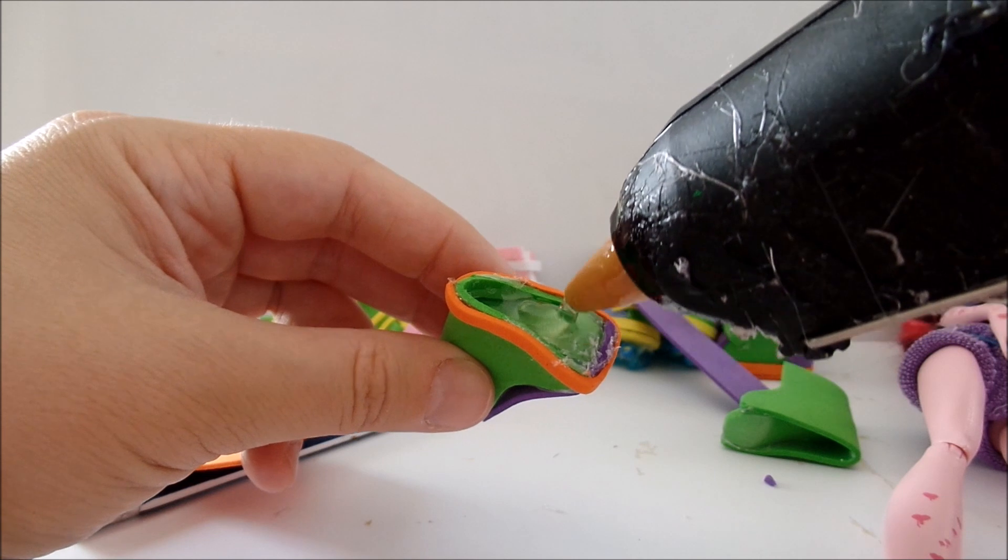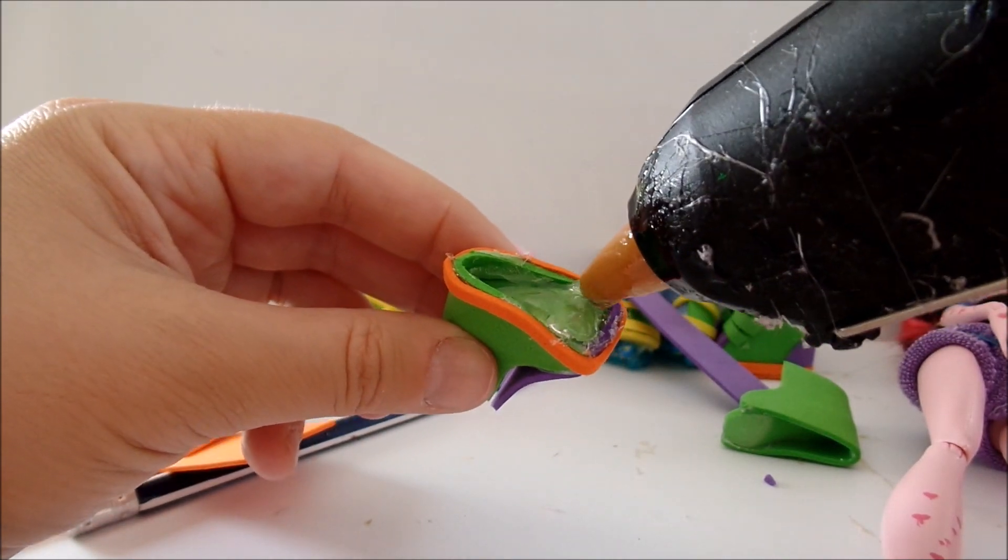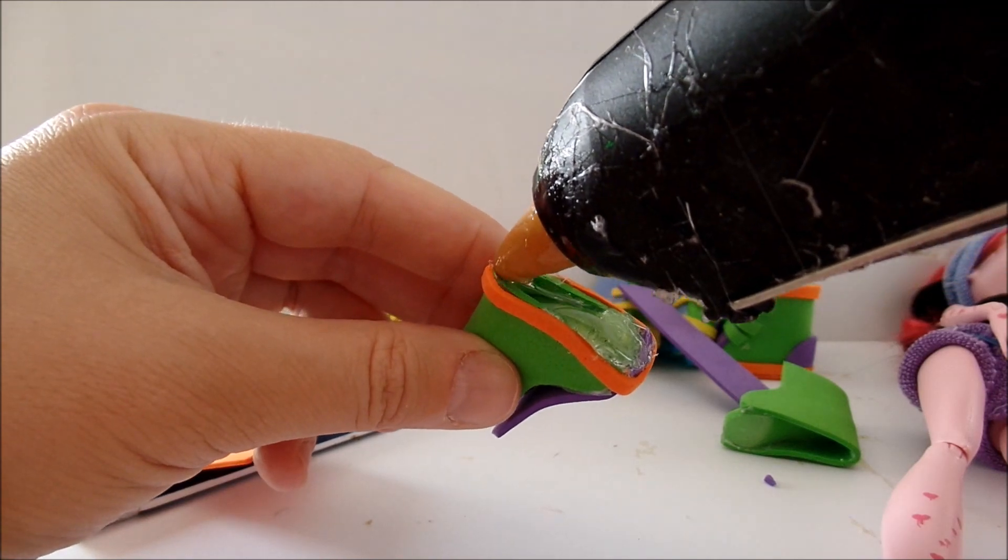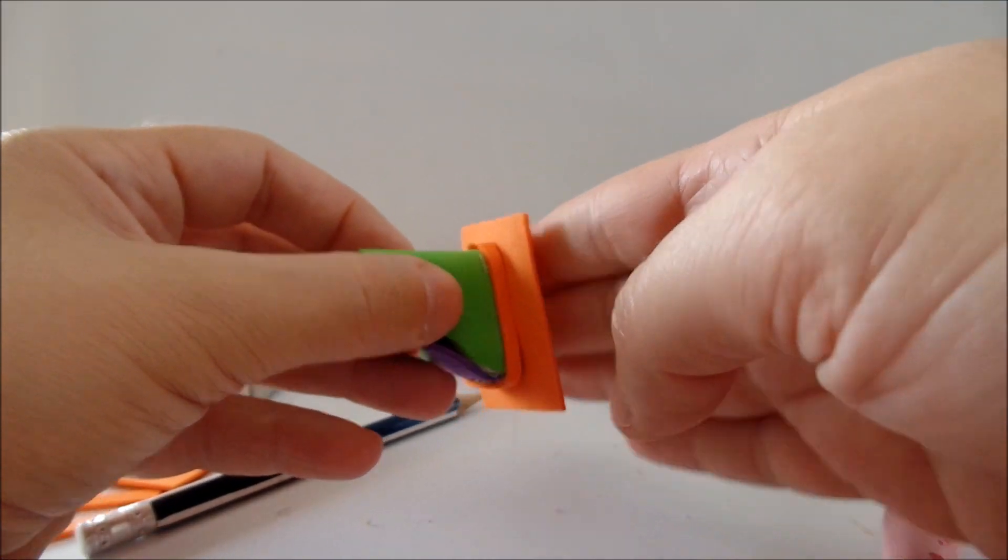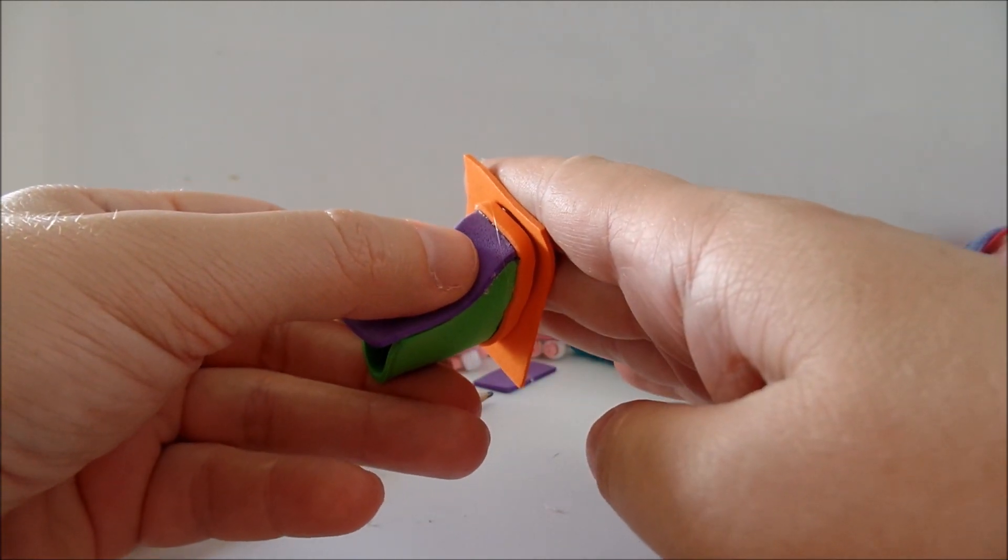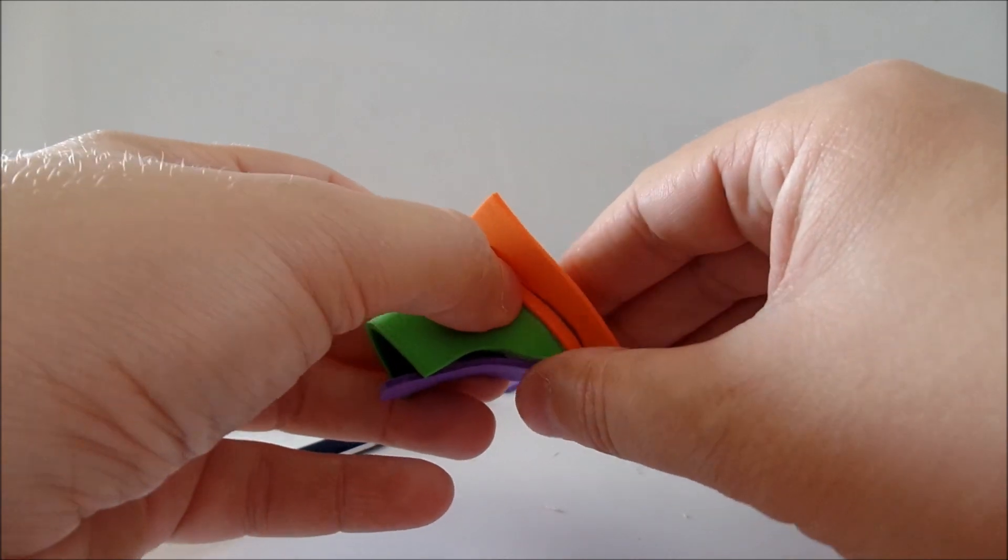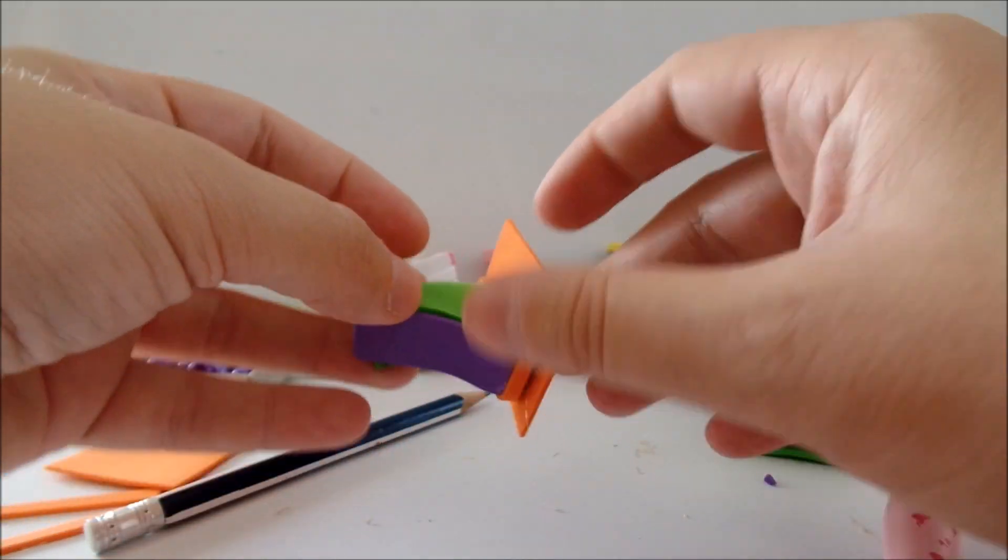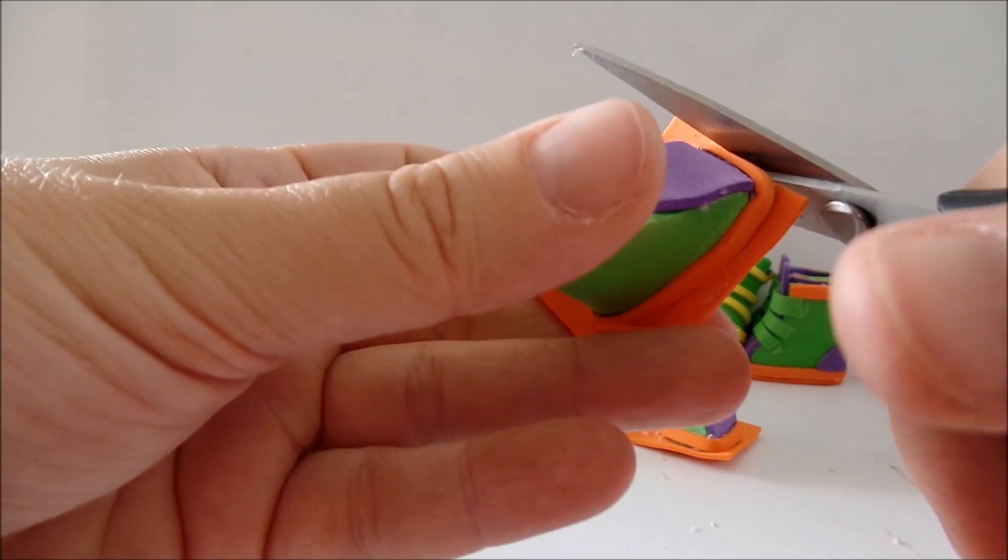Fill the entire ankle or the heel with glue and place a piece of foam paper on it. You can also shape the heel a bit by pressing inwards. Trim off the excess.